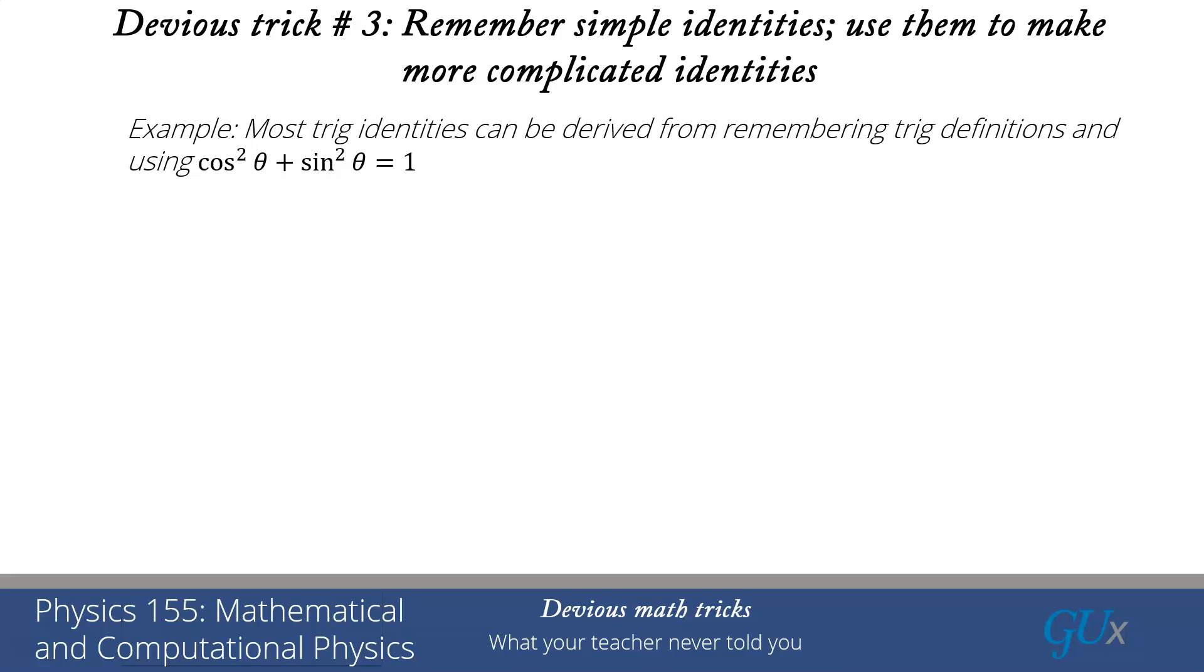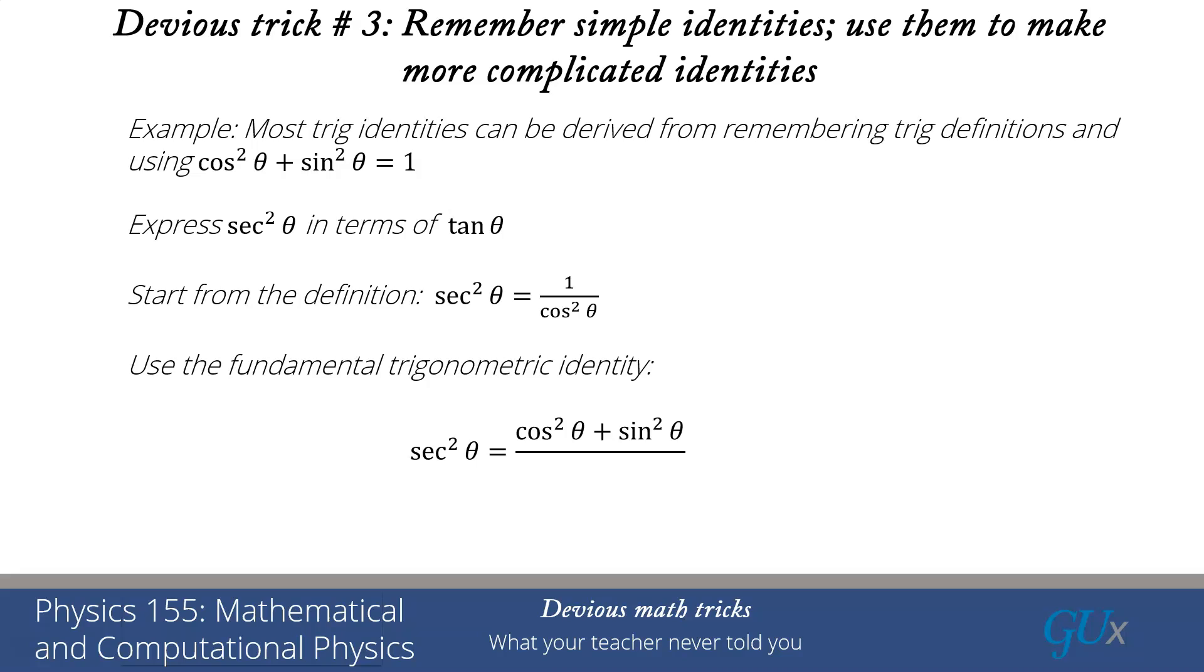What I'm going to show you is that most trig identities can be derived simply by remembering the definitions of the trig functions and using the fact that cos²θ + sin²θ = 1. Let's give an example. Let's express sec²θ in terms of tangent. First, let me start from the definition of secant squared. Secant is 1/cosθ, so sec²θ is 1/cos²θ. I want to now use my trig identity and substitute that 1 by cos²θ + sin²θ. And now you can recognize that the first term is just equal to 1, and the second term is just equal to (sinθ/cosθ)², which is tan²θ. So there you go. You derive that identity.